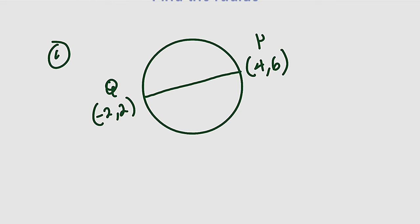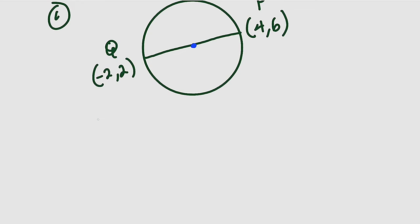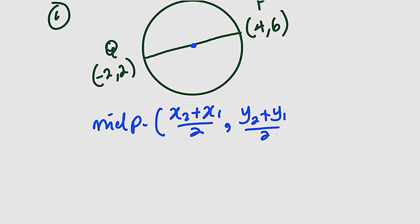Remember that to form that equation, we need the radius and the center. Let us start with the center. How can we find the center of this circle? The coordinates of this center will be just the midpoint of P and Q. The midpoint has the coordinates (x₂+x₁)/2, (y₂+y₁)/2. This will be the coordinates of the center.